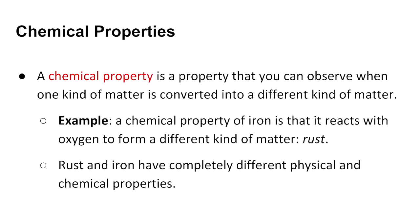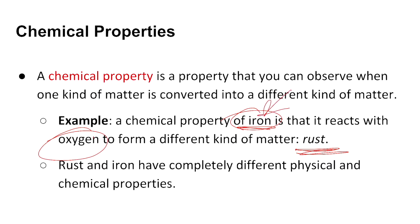Chemical properties are properties that you can observe when one kind of matter is converted into a different kind of matter. For example, iron has its own chemical properties — it has the ability to react with oxygen, and when it does, it actually forms a completely different type of matter known as rust. When you see a car rusting, the initial iron is more appealing, but the rust now has completely different properties. This ability to change into something else is the chemical property. Rust and iron have completely different physical and chemical properties.